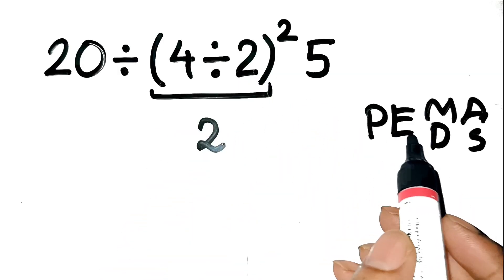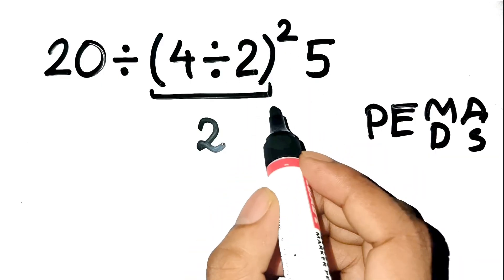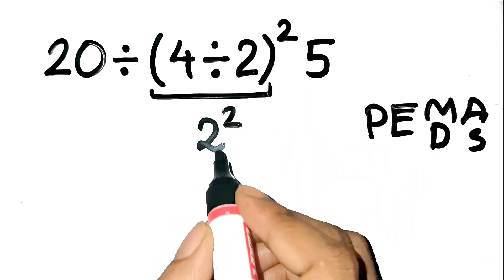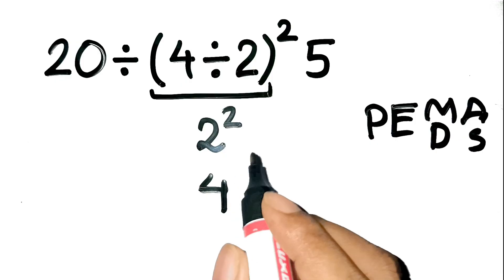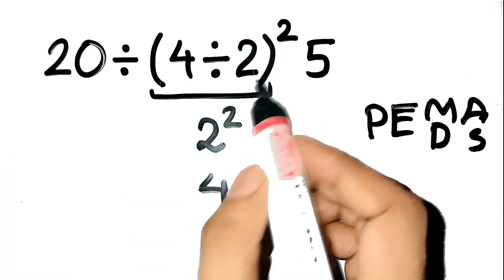Next comes the exponent, that little square outside. So now it becomes 2 squared, which is 4. So, after simplifying the parentheses and exponent,